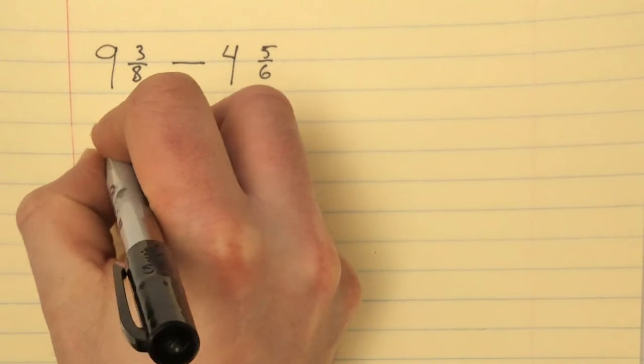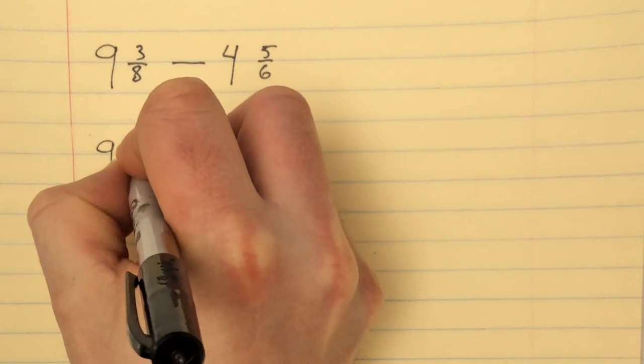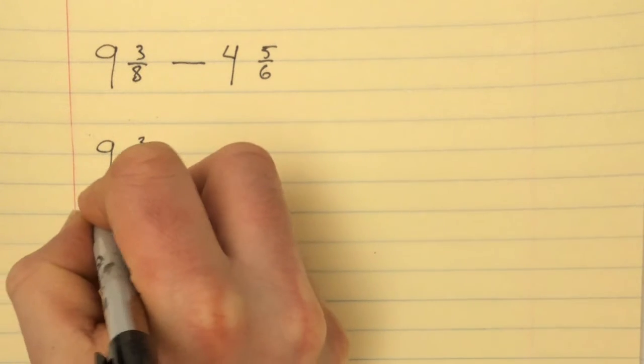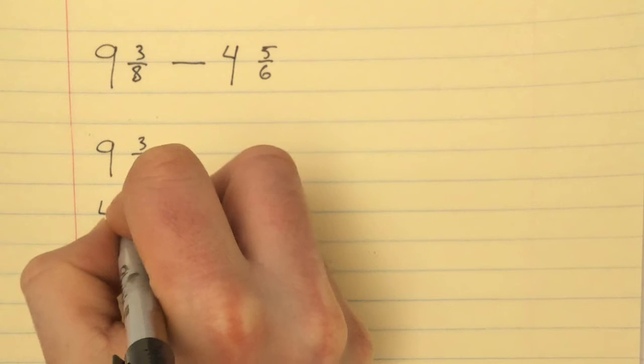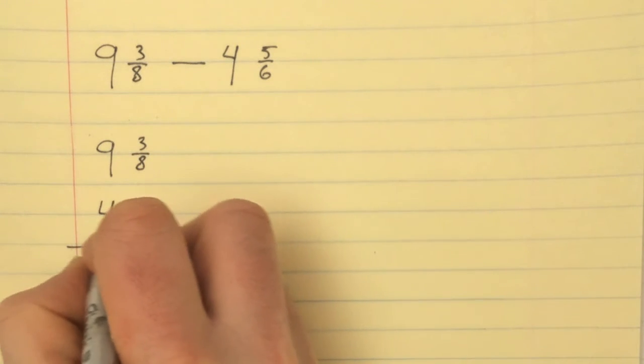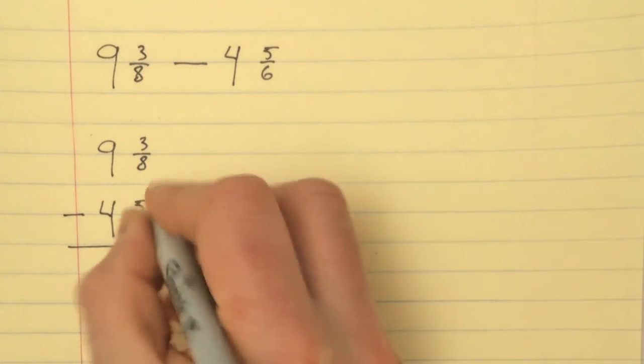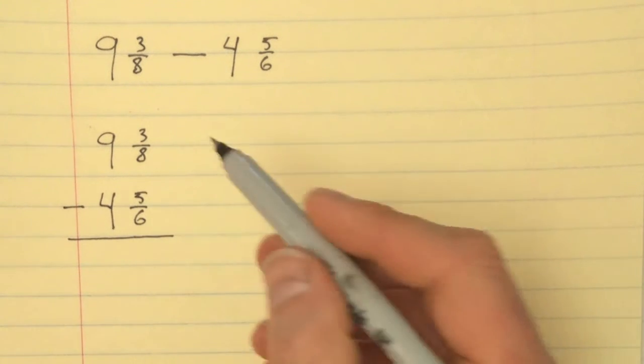we usually start here. We write it: 9 and 3/8 minus 4 and 5/6. And I keep things all nice and organized. I use the lines, I keep things spaced out. No need to cram everything.